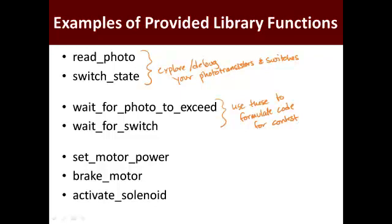In between those wait functions, these last three are what you'll use for your actuators. 'Set motor power' uses PWM to set the appropriate motor power. 'Brake motor' — which you should have seen in lab — nicely stops your motor rather than just cutting power to it; it's gentler on the brushes of your cheap motors. 'Activate solenoid' will activate the solenoid. Make sure to read all the documentation, as there are maximum and minimum limits built in to prevent you from destroying your solenoid.